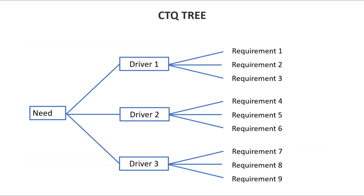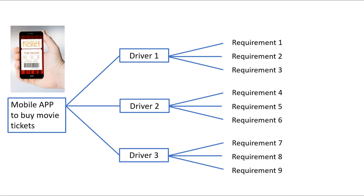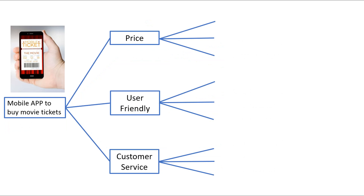We will explain the concept of CTQ tree through an example. Let's assume that a company made a customer survey and realized that they need to come up with a mobile app which will allow customers to buy movie tickets from it. That's the need, and it is somewhat general at this point. So what are the quality drivers this new product should have? The company can think of many, but let's just name three of them: price, user-friendly, and customer service.